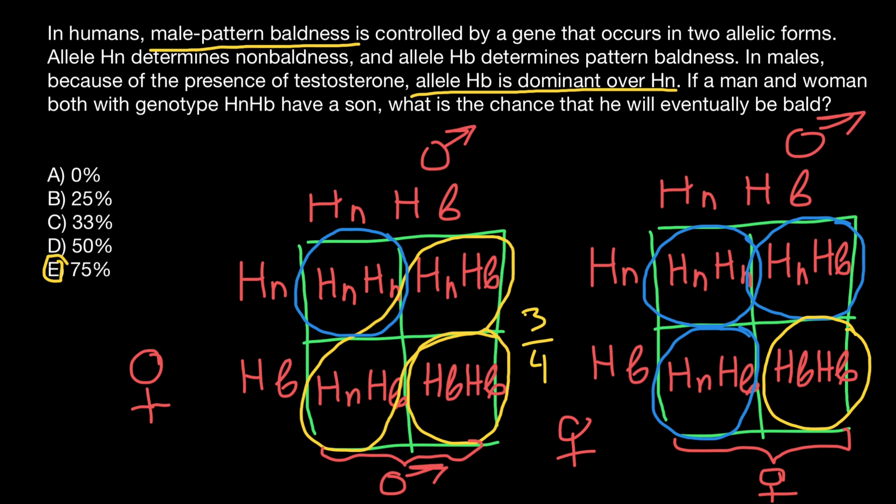So again, this is a sex-influenced trait, and it manifests in male progeny and female progeny differently. But our question today was about male progeny, so the answer is going to be 75%. One more time, the mother and father have the same genotype. Mother is going to have normal phenotype because in her case allele HN would be dominant.